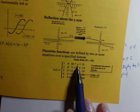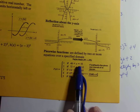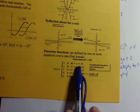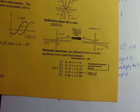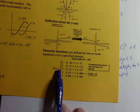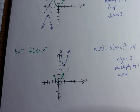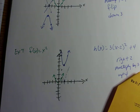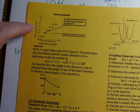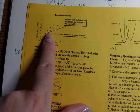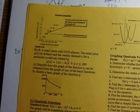The next type of graph we'll discuss are piecewise functions, which are defined by two or more equations over a specified domain. An example is the Fujita scale, used to measure tornadoes — different wind speed ranges correspond to F1 through F5 categories. That's one real-world example of a piecewise function, where the graph moves from one piece to the next.